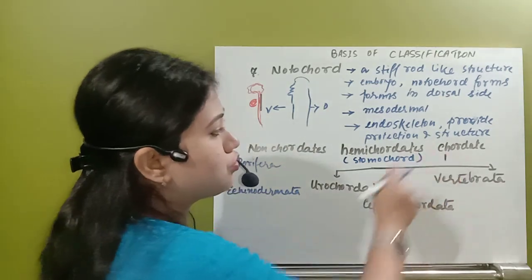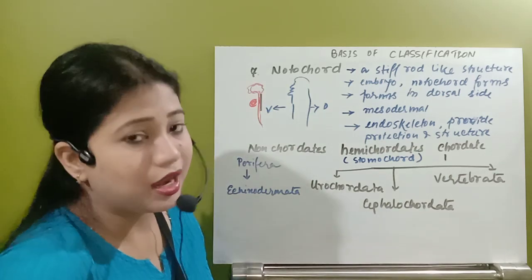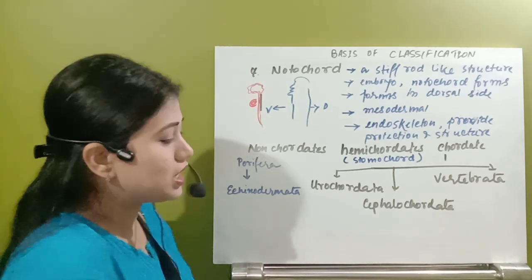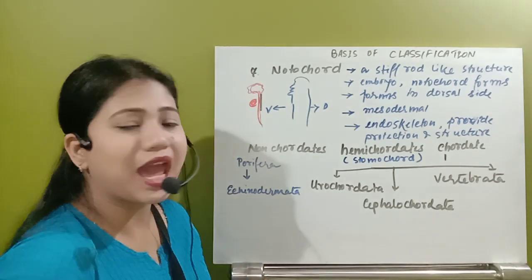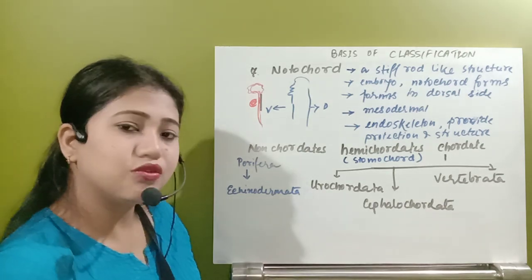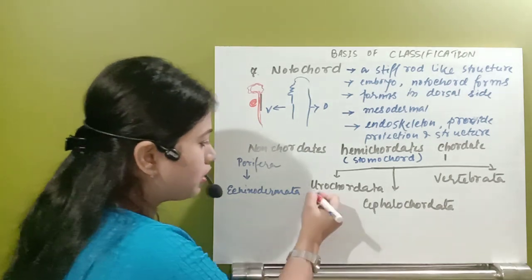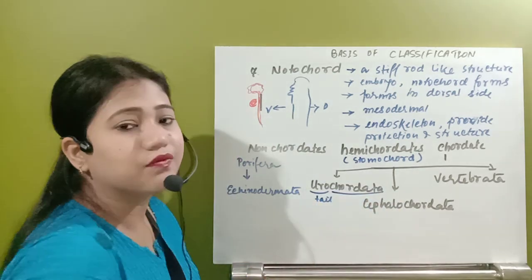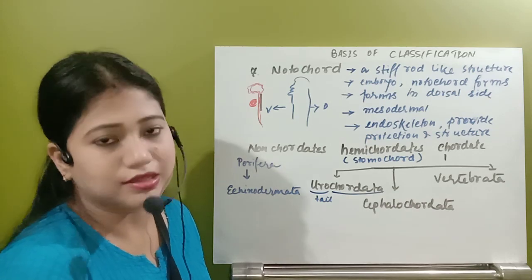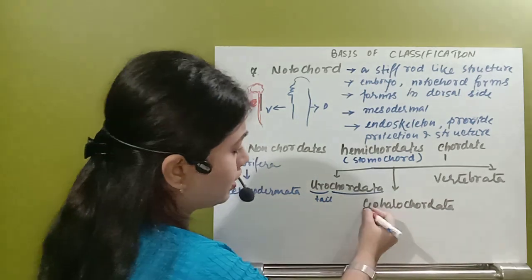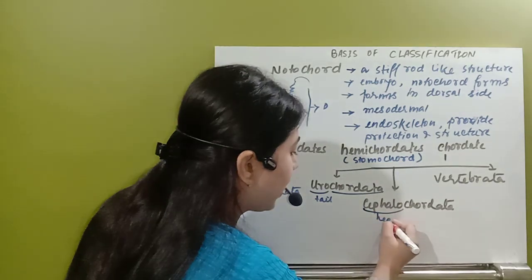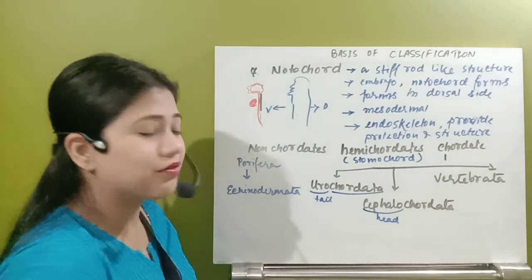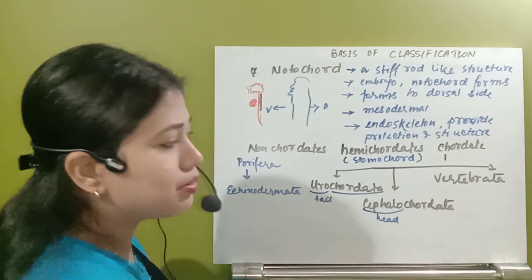Now come to the chordata. Chordata is a phylum and under the phylum we have lots of divisions. First division is urochordata, then cephalochordata, and then vertebrata. What is happening to urochordata? Euro means tail. Chordata means notochord. Those organisms which have the notochord in the tail region are known as urochordata. Next, cephalochordata - cephal means head. From the head to the last end they have the notochord. They are known as cephalochordata.